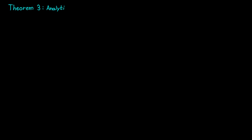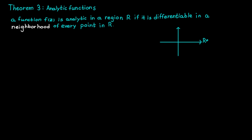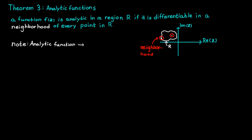The next theorem is about analytic functions and states that a function is analytic in a region R if it is differentiable in a neighborhood of every point in R. Note that the word neighborhood has many different meanings in mathematics, but right now it simply means all the points in a circle with an infinitely small radius around some point. An analytic function fulfills all the conditions for a holomorphic function and vice versa.